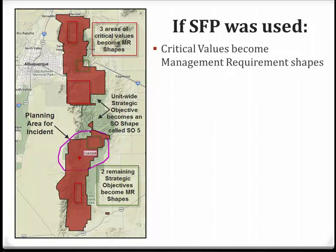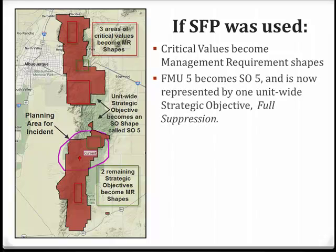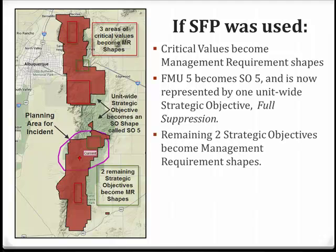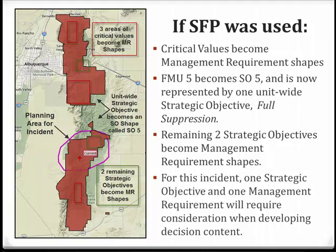If spatial fire planning were the selected planning process for this unit, the location of critical values would be represented by management requirement shapes. FMU 5 may be called strategic objective 5 and is now represented by the unit-wide strategic objective of full suppression. The remaining two strategic objectives would become management requirement shapes. In this example, only one strategic objective and one management requirement require consideration when developing a decision for this incident. Documenting a decision for a unit that has chosen spatial fire planning may be less intensive and time-consuming than if FMU planning were selected.